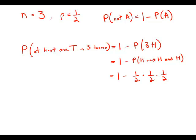So this would be one minus one half times one half times one half. That is one minus one eighth. Changing that to eight over eight minus one over eight, we get seven over eight.